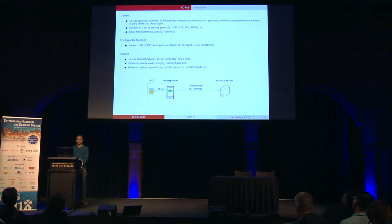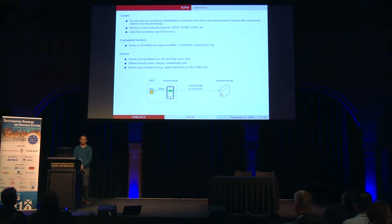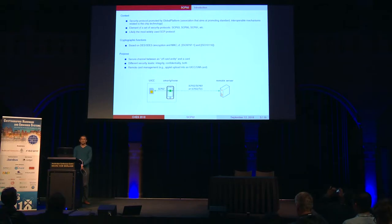SCP-02 is a security protocol promoted by Global Platform. It's an element of a wider set of protocols, such as SCP-03 or SCP-80. Each protocol has different features, and SCP-02 is based on two symmetric key functions, DES and triple DES. With these two functions, a mutual authentication scheme, a key exchange scheme, and a secure channel are provided, and the secure channel aims at guaranteeing data confidentiality and data integrity.